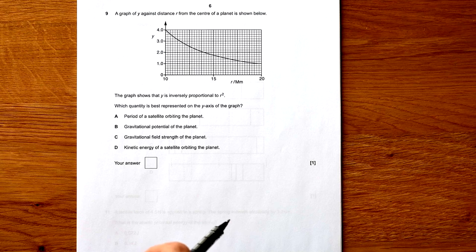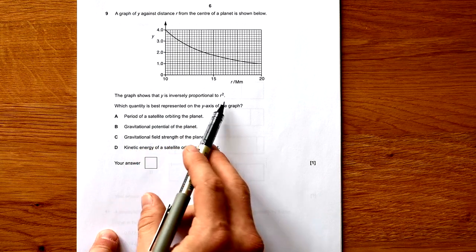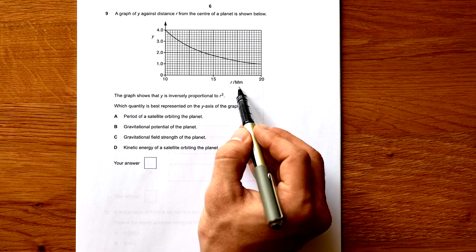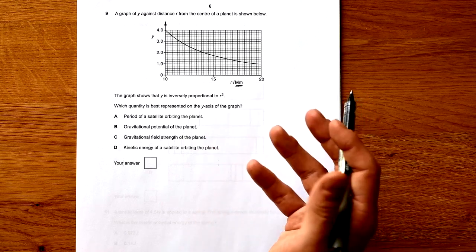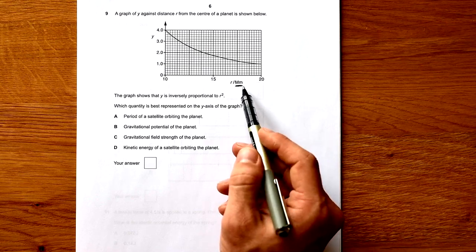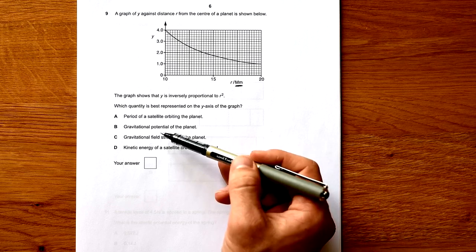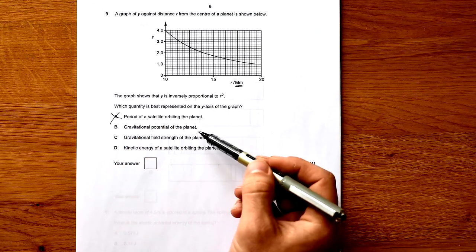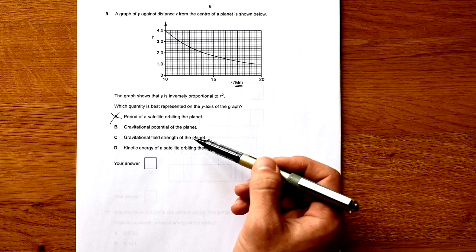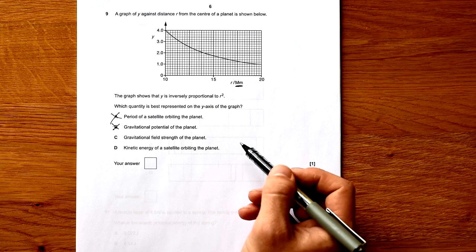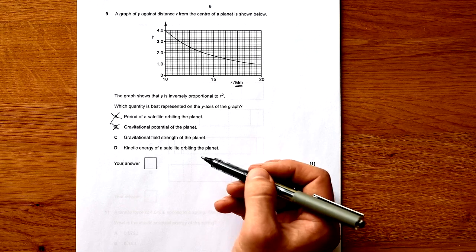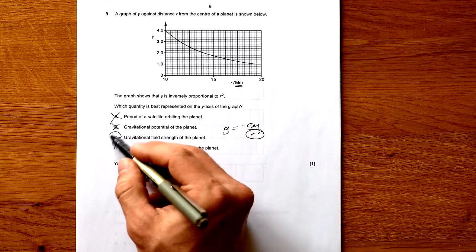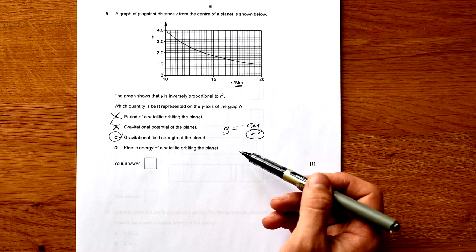Question 9: Graph of y against distance r from the centre of a planet shown below. The graph shows that y is inversely proportional to r squared. Which quantity is best represented on the y axis? Be careful because that looks like big M little m which is what we have in Newton's law of gravitation. Which of these falls away according to r squared? Period of a satellite? Kepler's law disproves that. Gravitational potential? No, that's proportional to 1 over r not 1 over r squared. Gravitational field strength? Yes, we know that g equals minus GM over r squared. It falls away with r squared. So that's correct.